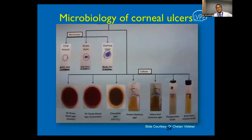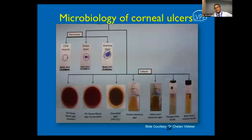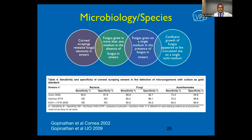The basic microbiology of corneal ulcers includes a smear using a calcofluor wet mount, Gram stain, and Giemsa staining, and culture with solid and liquid media. Solid media consists of 5% sheep blood agar, chocolate agar, potato dextrose agar, and Sabouraud dextrose agar. Liquid media consists of thioglycolate broth and brain heart infusion broth. To report as fungus-positive, either the corneal scrapings must reveal fungal elements in the smear, or there is growth from more than one medium with negative smears.